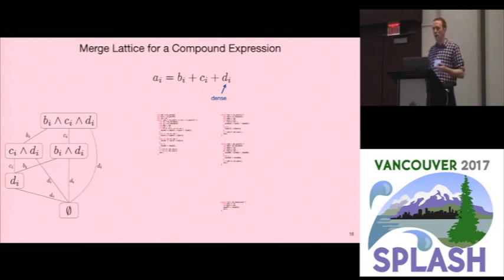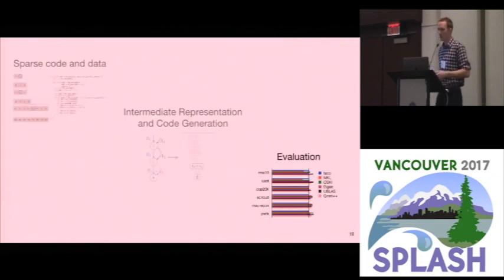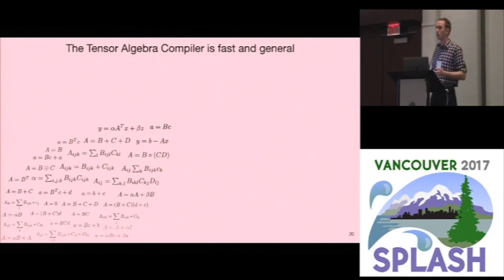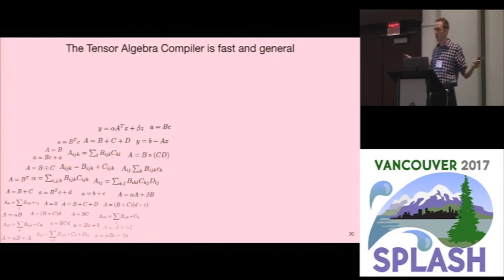In our paper, we describe how to generate lattices for an expression and how to optimize them. Now I'll evaluate our technique. The story is that there's an infinite space of expressions. Some have been hand-optimized by expert programmers, and many have not. For expressions that someone hand-optimized as sparse expressions, we perform comparably. For the other expressions, we also have great performance across the board.